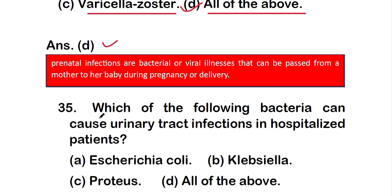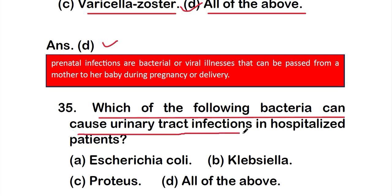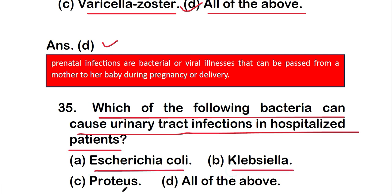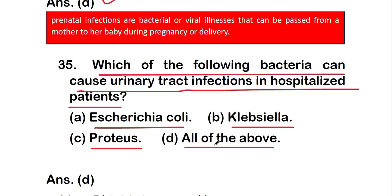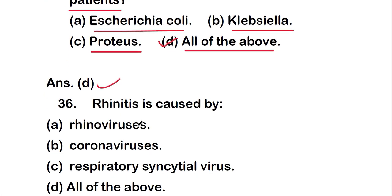Question 35: Which of the following bacteria can cause urinary tract infection in hospitalized patients? Option A: Escherichia coli, option B: Klebsiella, option C: Proteus, or option D: all of the above. The right answer is option D — all of these organisms can cause urinary tract infection in hospitalized patients.